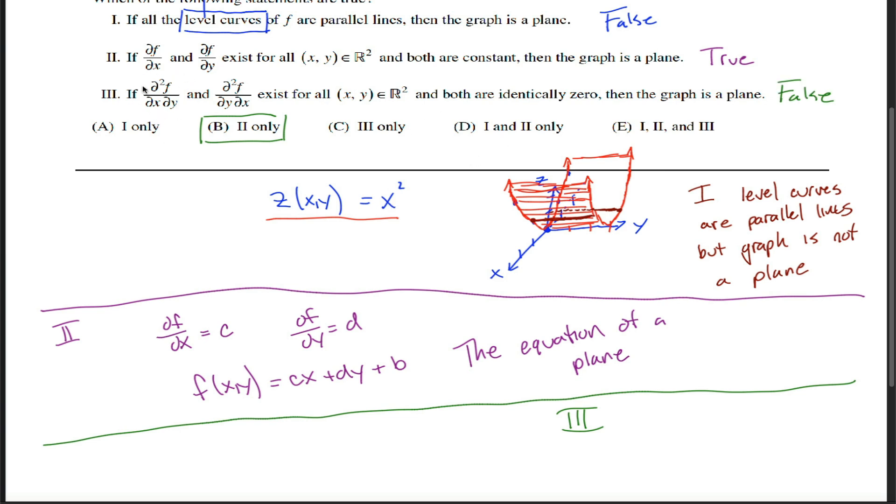So first, just understanding what this is saying. This is asking you to take the derivative with respect to y, treating x like a constant, and then take the derivative with respect to x of that answer. Same idea here, but in reverse. So what we need is a function so that both those things will be equal to zero, but the graph would not be a plane. Can you think of any? Maybe one that's drawn ever so beautifully already on this page?